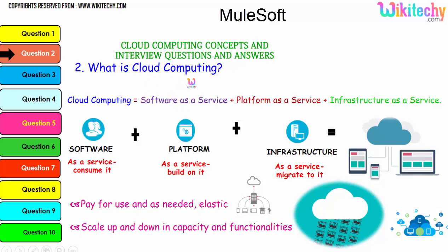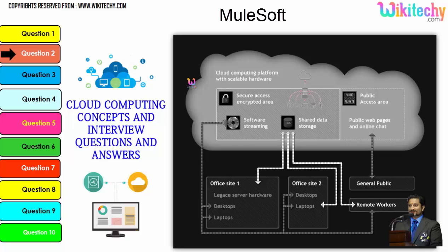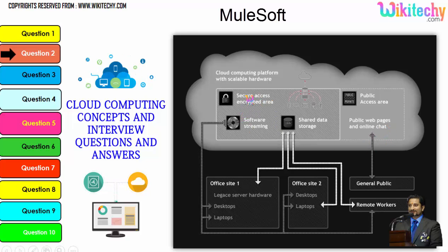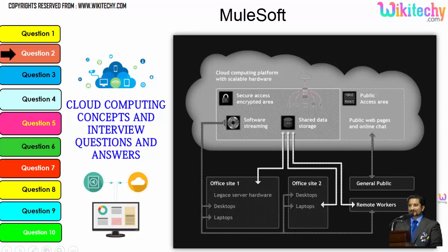You are able to see that cloud computing has a public access area — public web pages for end users — and also secure data access, shared data storage, and software streaming. Companies can use it as a private kind of cloud, and the public can also use it to access web pages or websites. This is how cloud computing works.